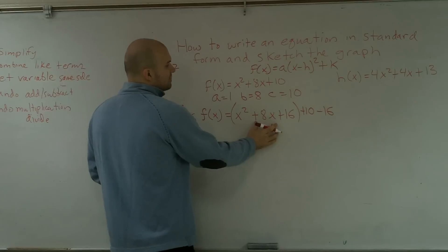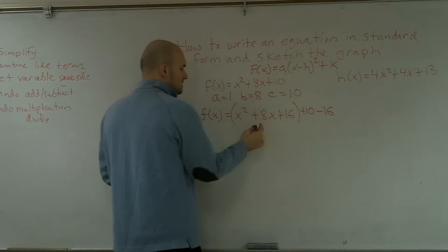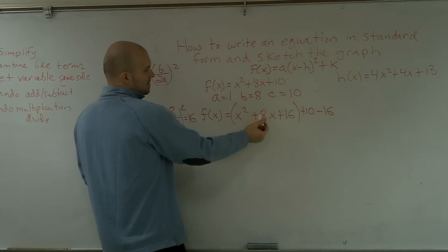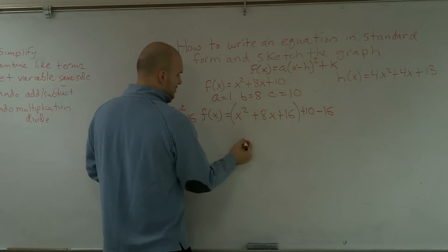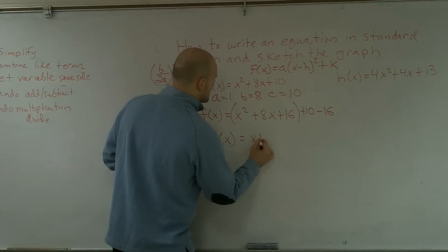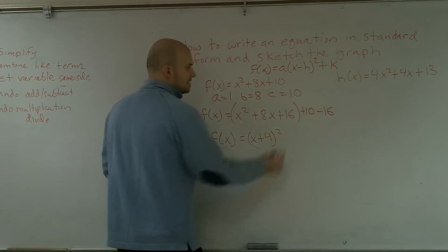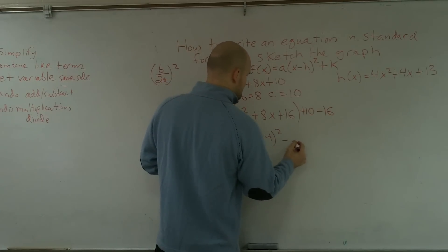Now, this can now be in the form of x minus h or x plus h, because I know that x plus 4 times x plus 4 is going to give me the solution. So I'll have f of x equals x plus 4 squared and then minus 6.